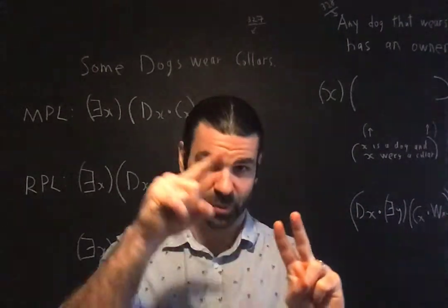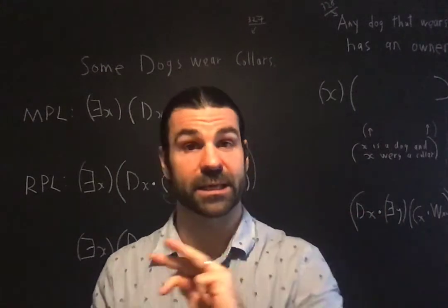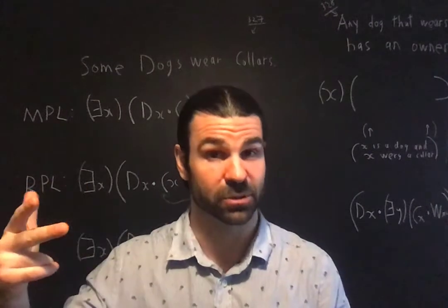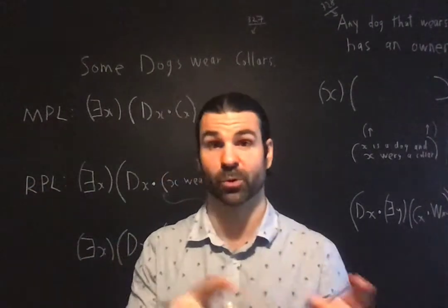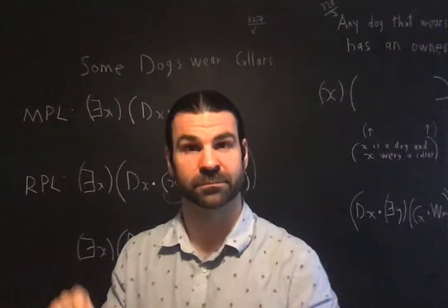Either some of the subject class are included or excluded from the predicate class, or all of the subject class are included or excluded. That gave us our four kinds of categoricals: A and I from the word affirmo, universal and particular inclusion, and E and O from the word nego, universal and particular exclusion.